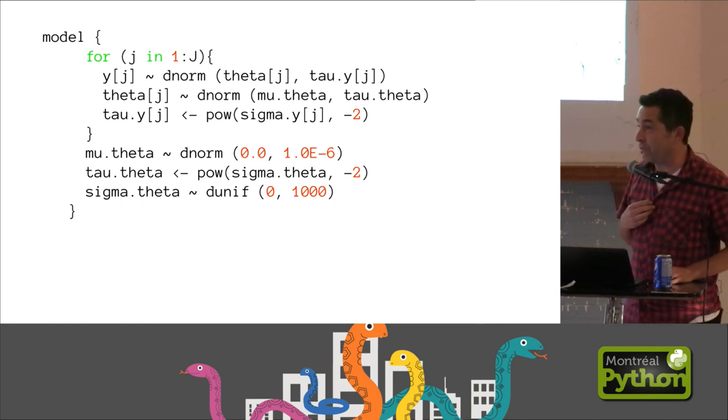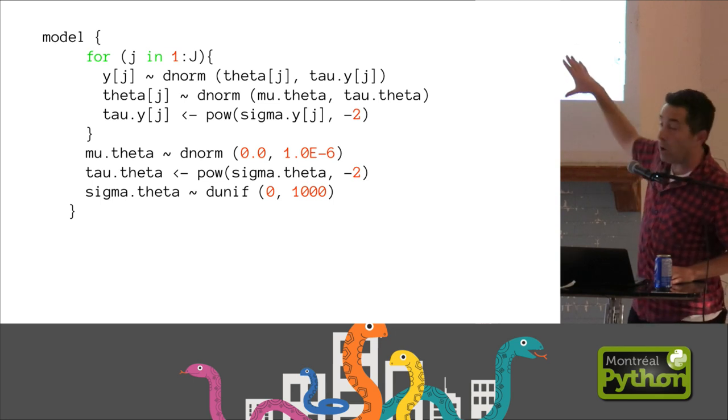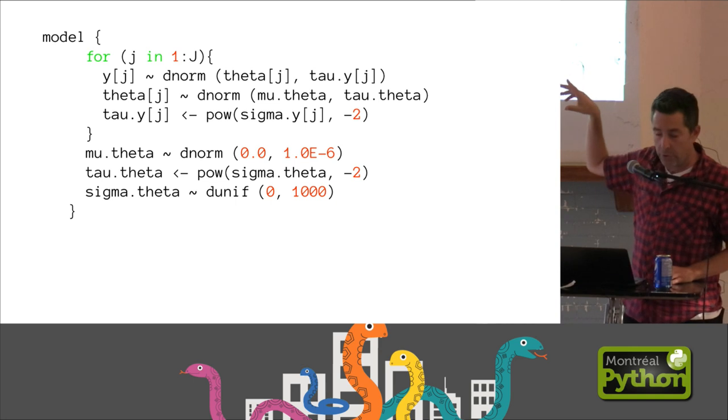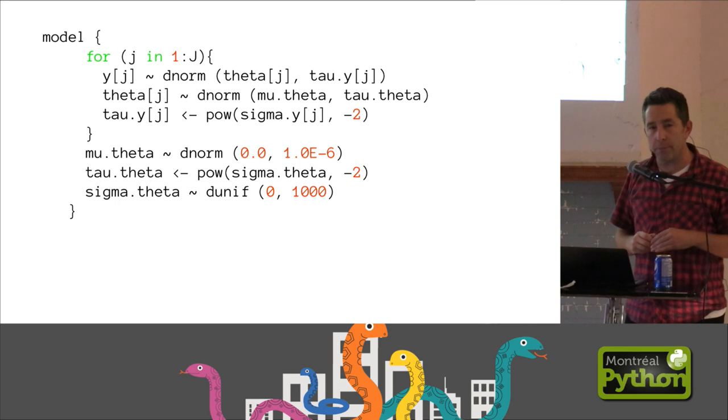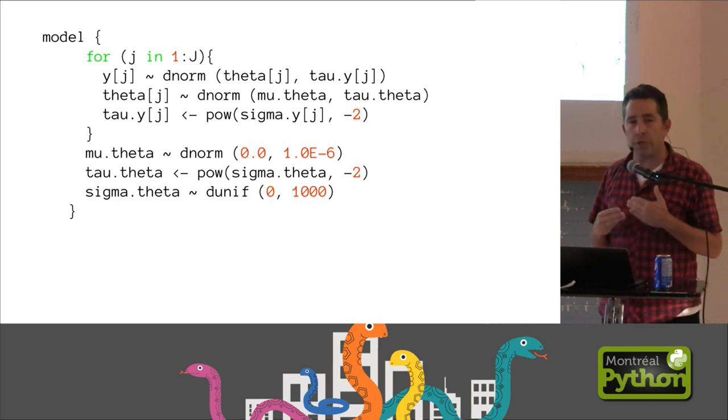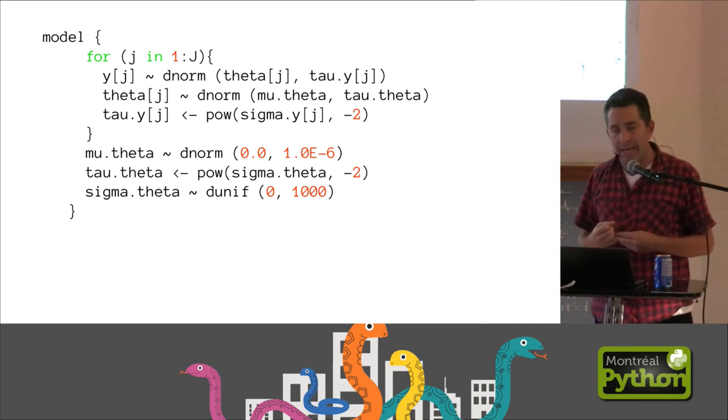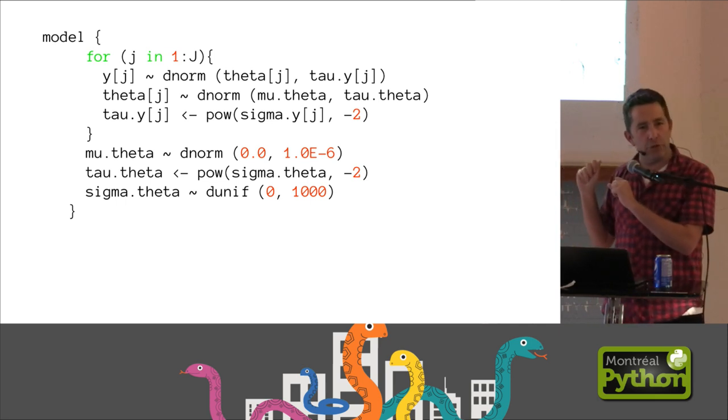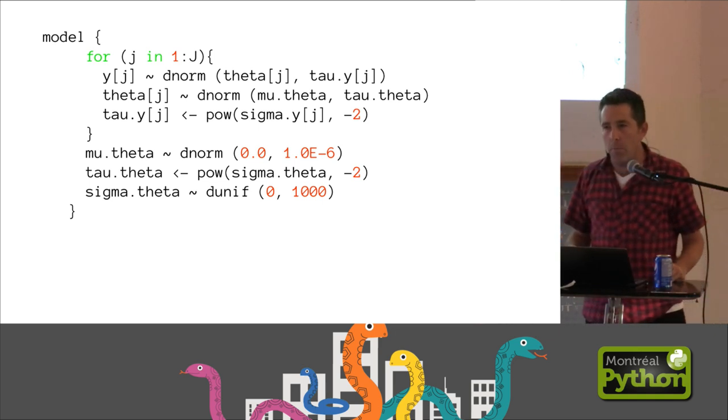And even better is there was this really nice domain-specific language that it used called bugs. Sort of an R-like syntax. For any of you familiar with R, this looks very R-like. This is a complete model, a complete hierarchical model in seven lines. And this was really great. It allowed me and others to do lots and lots of things. But after a while, you kind of hit your head on the ceiling. There's a few things wrong with it. It was closed source. And it's this kind of domain-specific language where you had to get everything into bugs and then get everything out when it was finished.